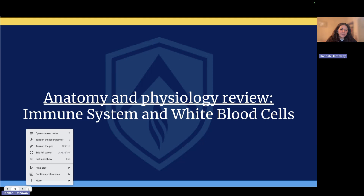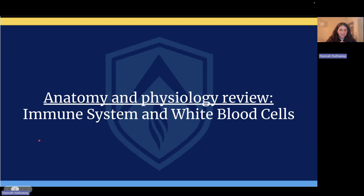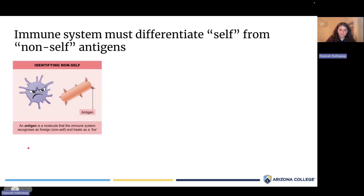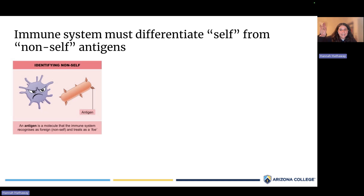Before we hop into specifics about the immune system, we're going to do a little review of things you should have learned previously in A&P. The purpose of the immune system is to fight pathogens and infections. In order to do that, the immune system has to differentiate self — meaning your own cells — from non-self, from dangerous external pathogens.